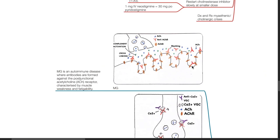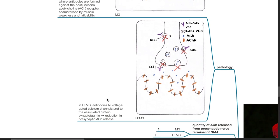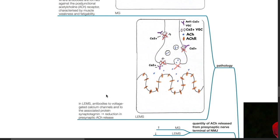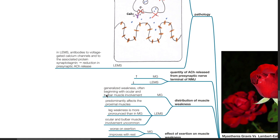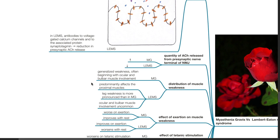Pathology. Myasthenia gravis is an autoimmune disease where antibodies are formed against the post-junctional acetylcholine receptor characterized by muscle weakness and fatigability. In LEMS, antibodies to voltage-gated calcium channels and to the associated protein synaptotagmin result in reduction in presynaptic acetylcholine release. The quantity of acetylcholine released from presynaptic nerve terminal of the neuromuscular junction is increased in myasthenia gravis and decreased in LEMS.